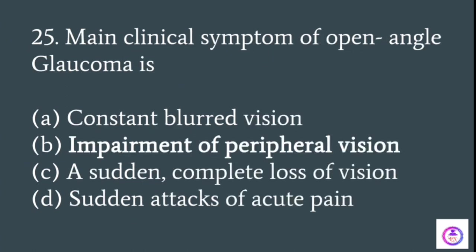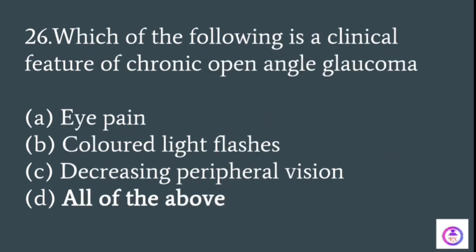The main clinical symptom of open-angle glaucoma is impairment of the peripheral vision. The clinical features of chronic open-angle glaucoma include pain in the eye, colored light flashes, and decreased peripheral vision — so the answer is all of the above.